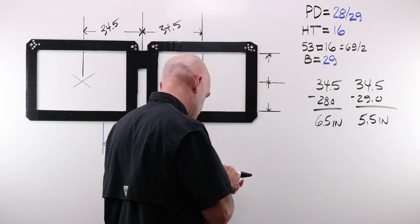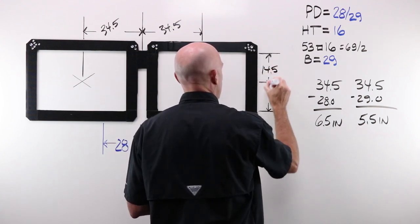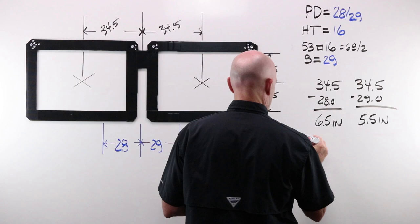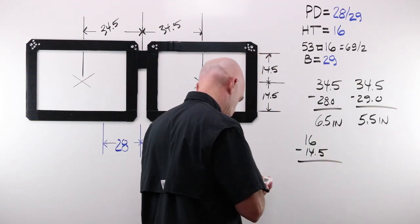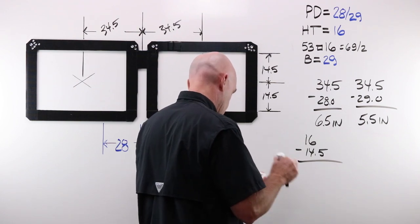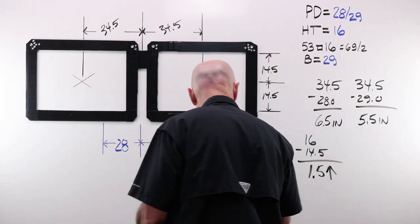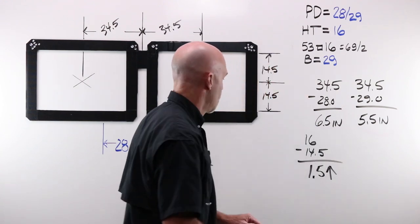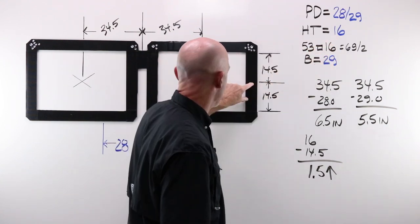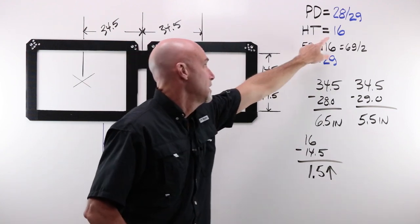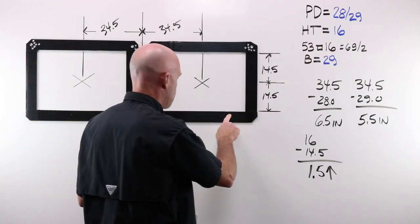34.5 minus 28 is 6.5 in for my right. 34.5 minus 29 is 5.5 in for my left. My B is 29. Split that, I get 14.5. And I've got 16 minus 14.5. I need to move one and a half up. Why up? Because my fitting cross location is above half my B.